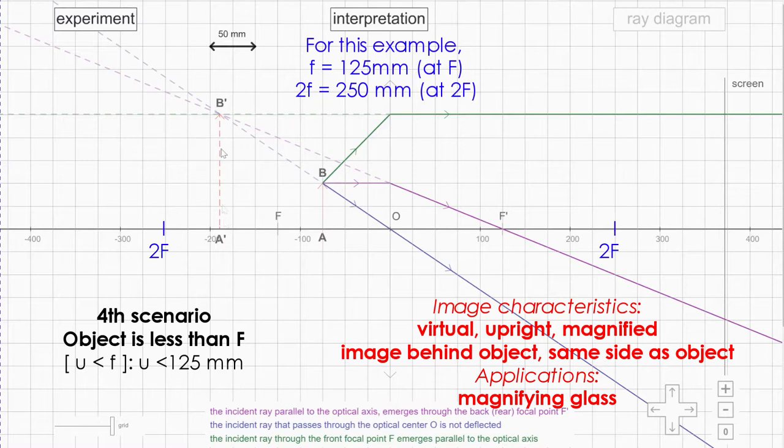This image will be at this position. Take a look at this image - it's rather different. It's virtual. That's why you have to use dotted lines to represent virtual image. It cannot be formed on the screen. It is upright.